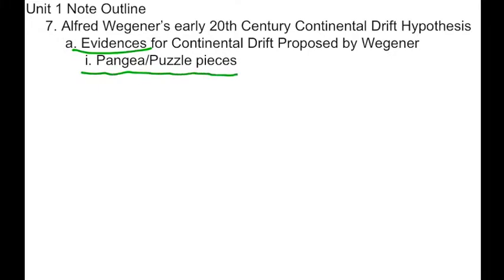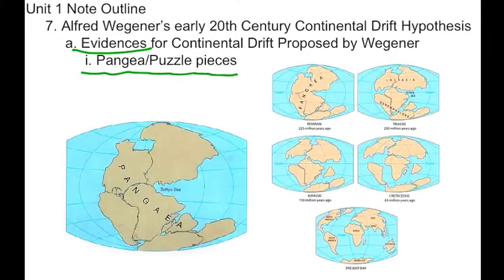One of the first evidences that Alfred Wegener noticed is that the Earth has land masses, or continents, that look like they used to fit together like pieces of a puzzle.